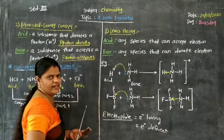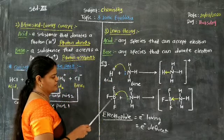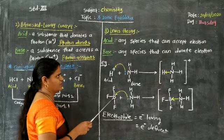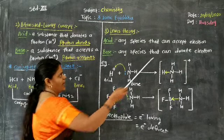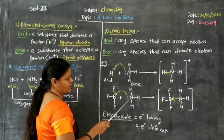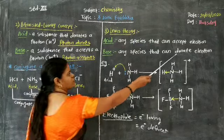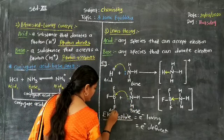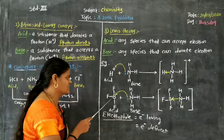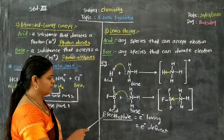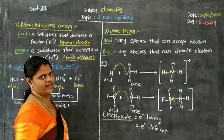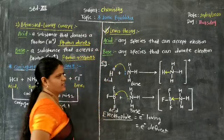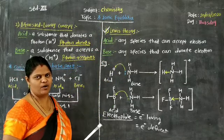A second example: BF3 (boron trifluoride) is an electron-deficient species, and NH3 is an electron-rich species. Electron-deficient species have a tendency to accept electrons, and electron acceptors are Lewis acids. Electron-rich species have a tendency to donate electrons, and electron donors are Lewis bases. Therefore, BF3 is a Lewis acid and ammonia is a Lewis base. The acidic nature of BF3 can only be explained by Lewis theory and not by Arrhenius or Bronsted-Lowry theory. Therefore, Lewis theory is one of the most advanced theories to classify compounds as acids or bases.